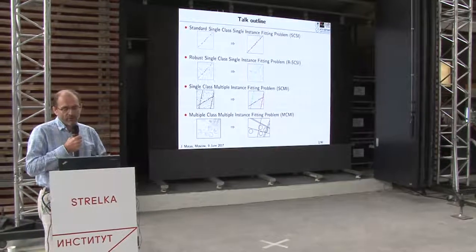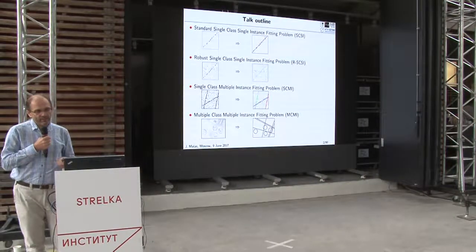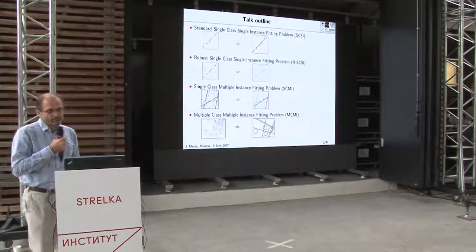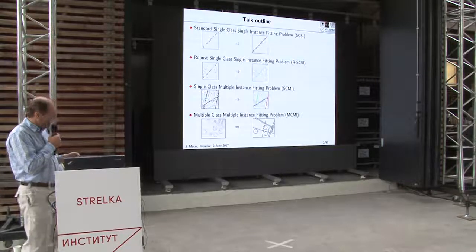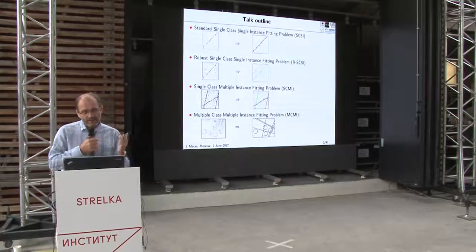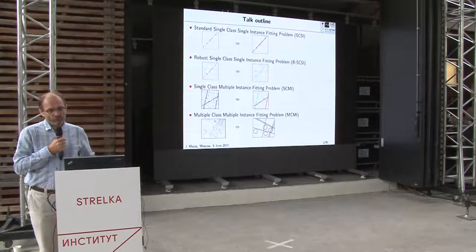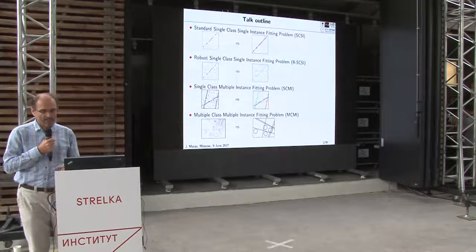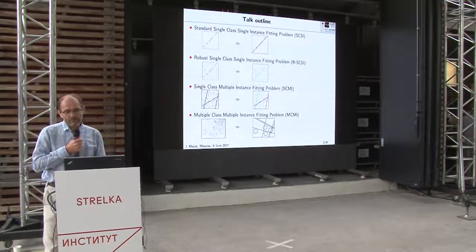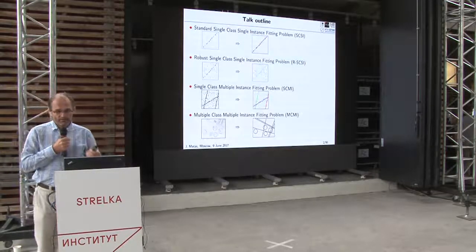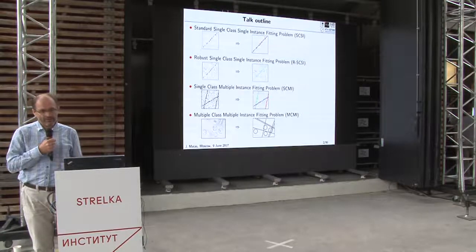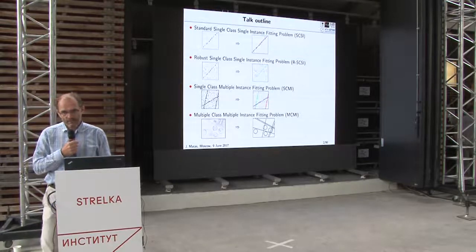The third level I'll talk about is single-class multi-instance problem fitting. That's the case where you have an image with multiple points and dense areas which should be interpreted by lines. We are still looking for one class of objects — lines — but the interpretation includes multiple instances: the red, green, and blue line. I abbreviate this SCMI: single-class multi-instance.